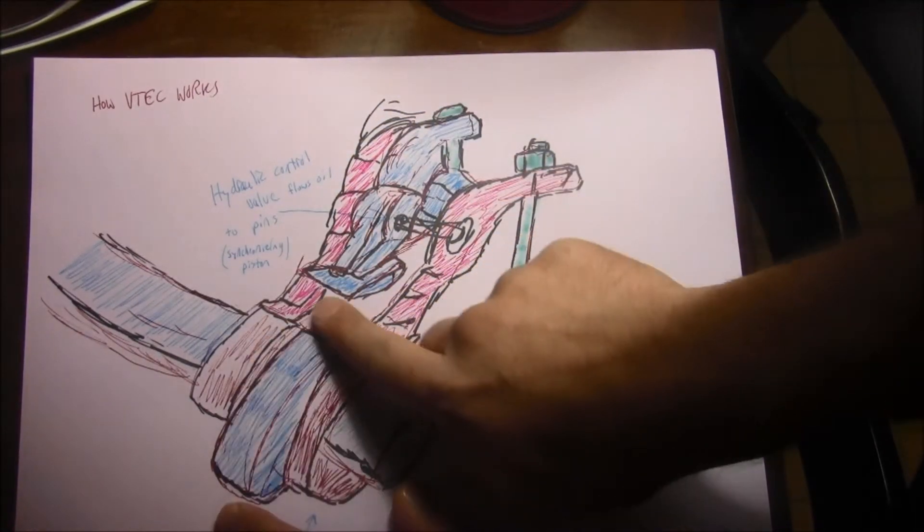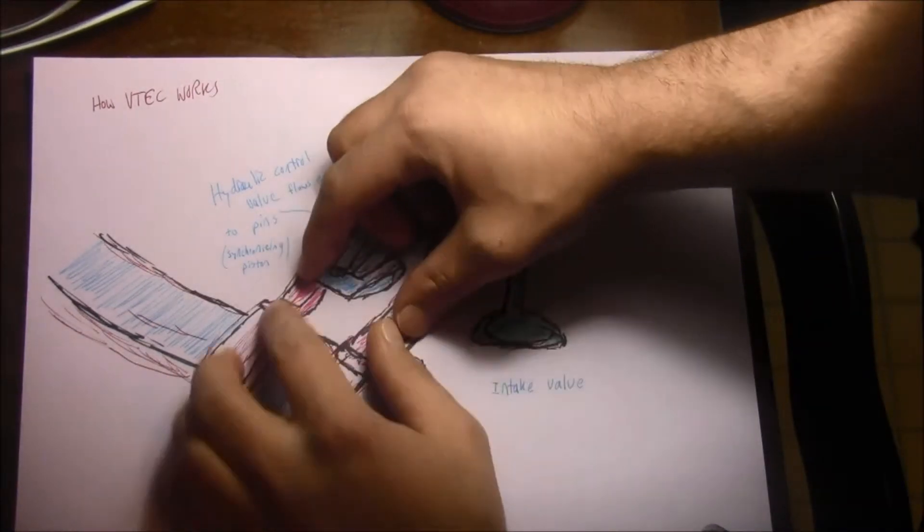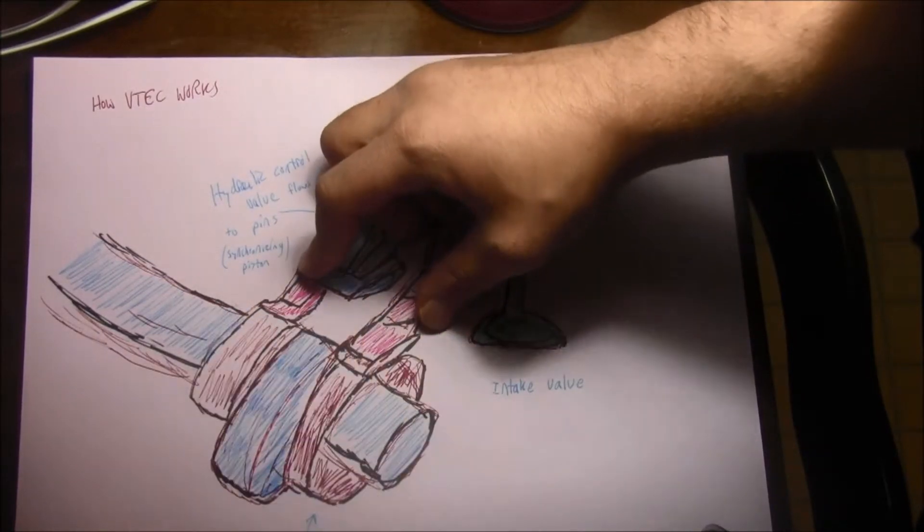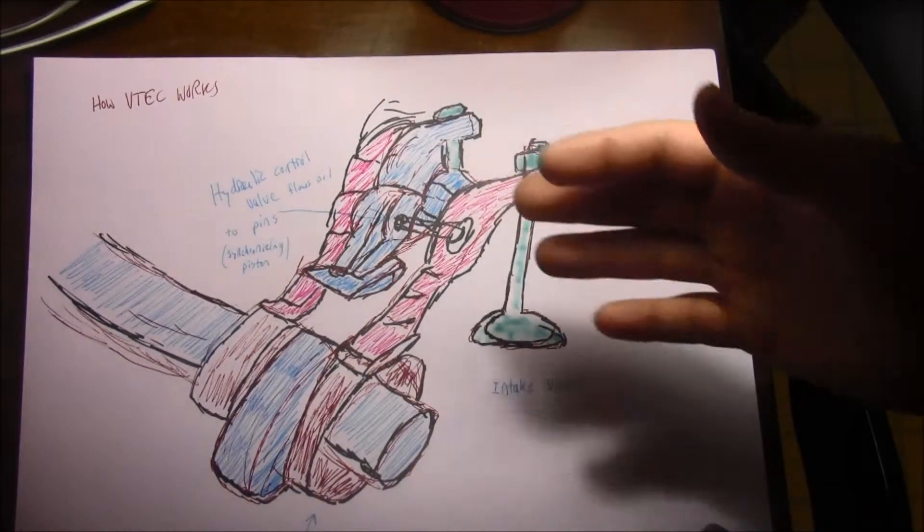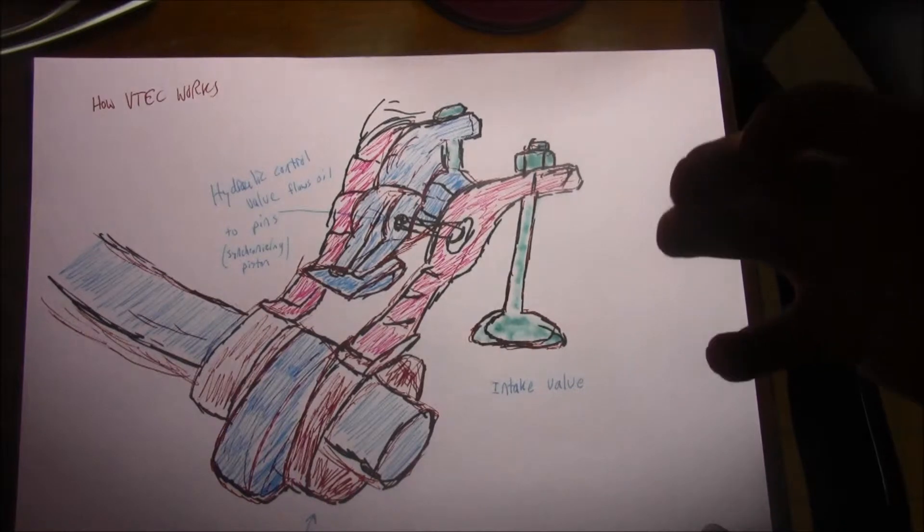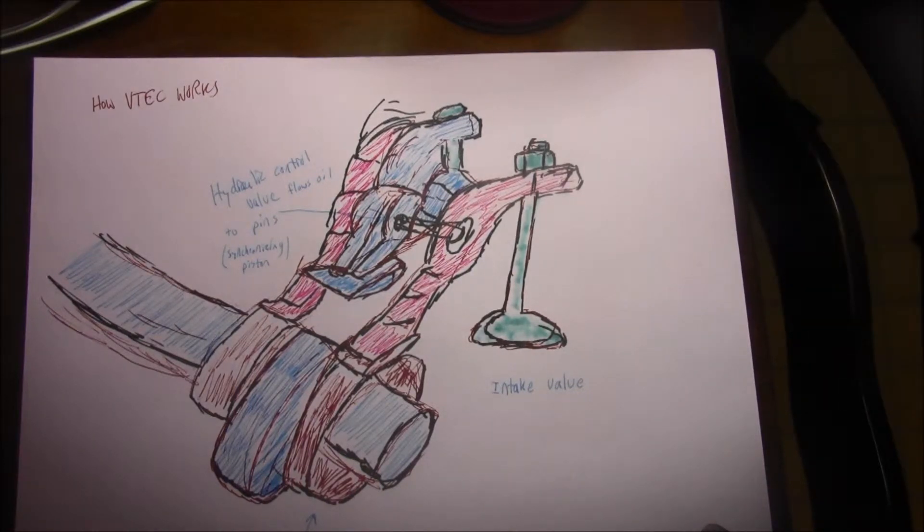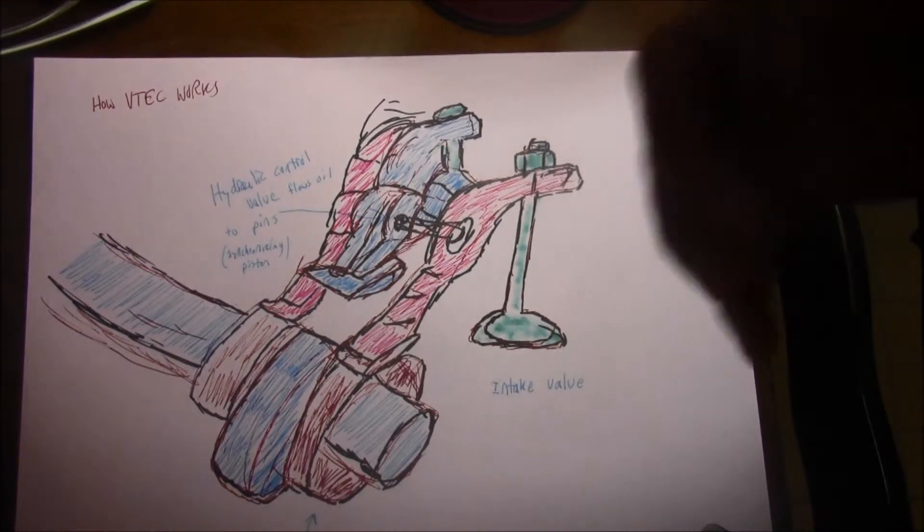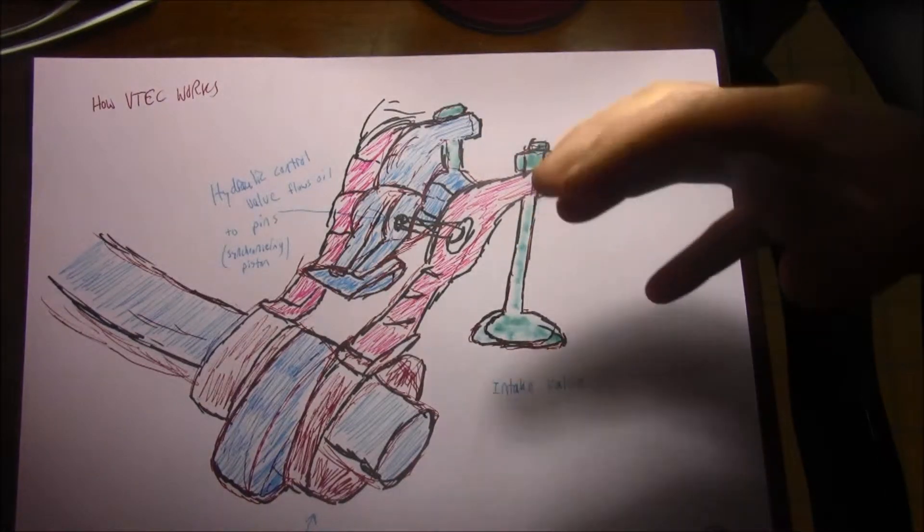The high lift cam profile comes up here and contacts all three of your rocker arms, which helps your intake open longer at high speeds. Your air-fuel ratio is awesome at that point. You have high speed air and fuel going into your combustion, resulting in more power.